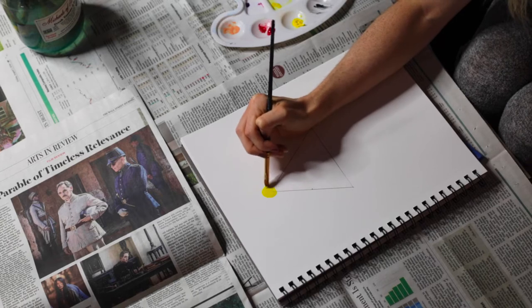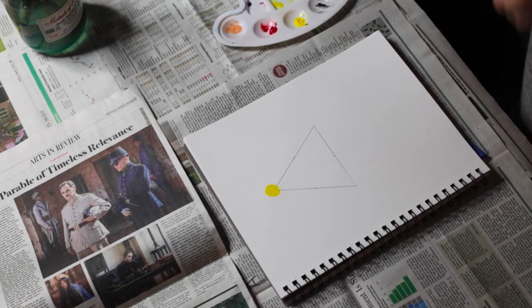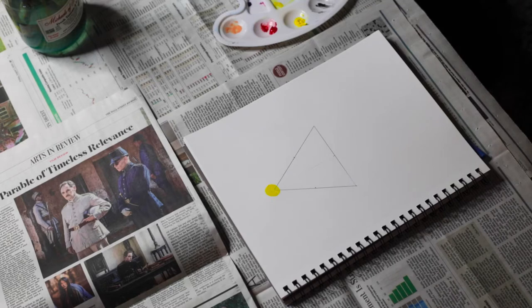Now instead of a traditional color wheel, I'm creating a sort of color triforce here, which is essentially the same exact thing. Just instead of a wheel, we're doing a triangular shape. So at the very top here, you can see I laid down yellow, which is the first primary color that we're going to start to work with.